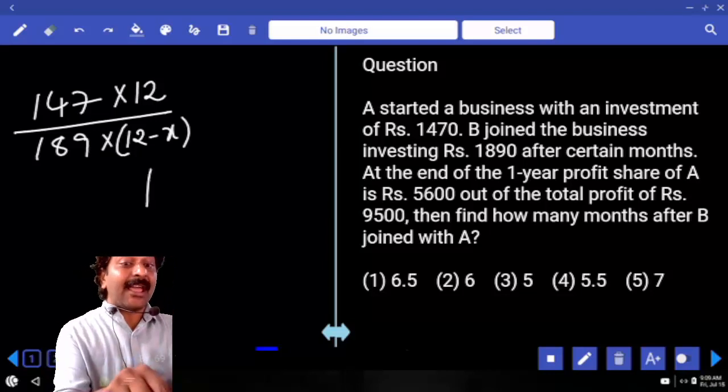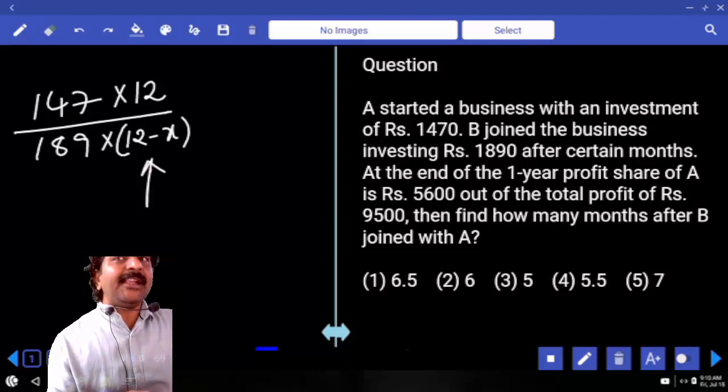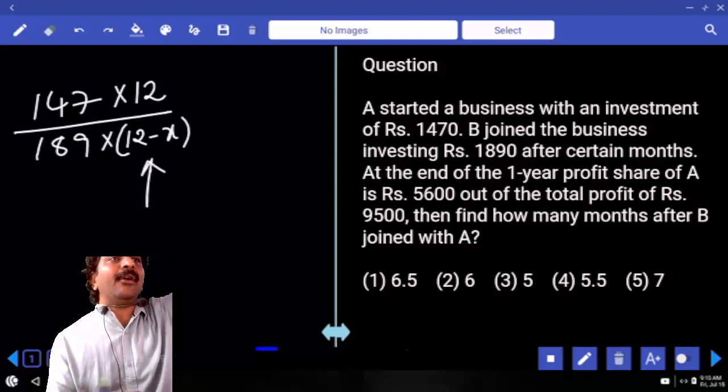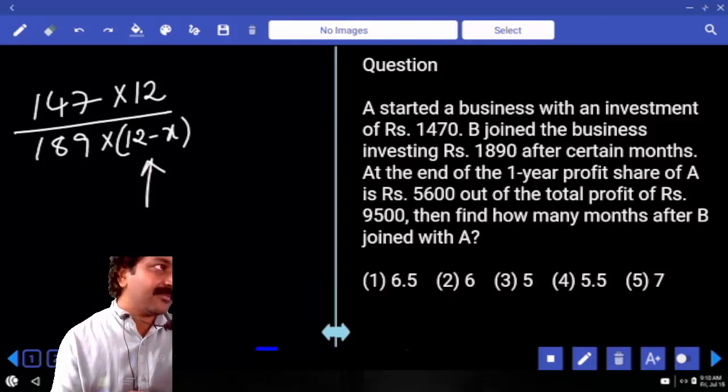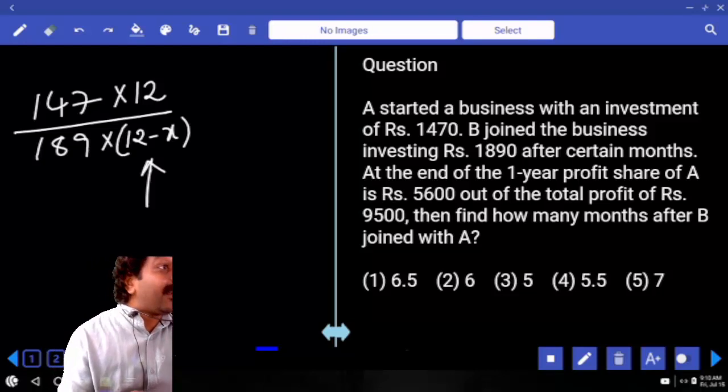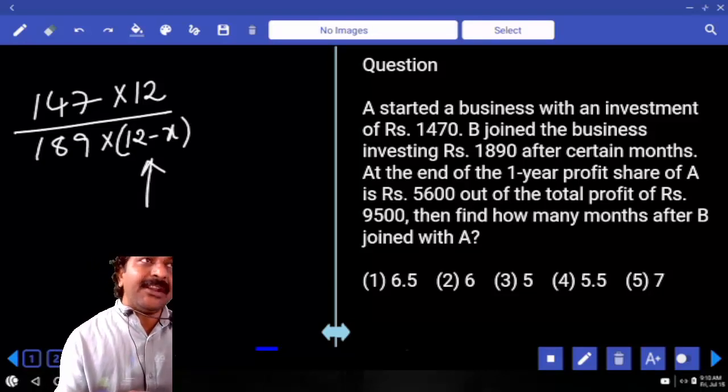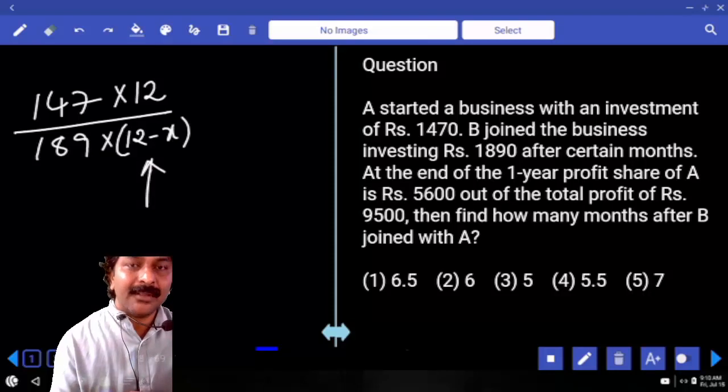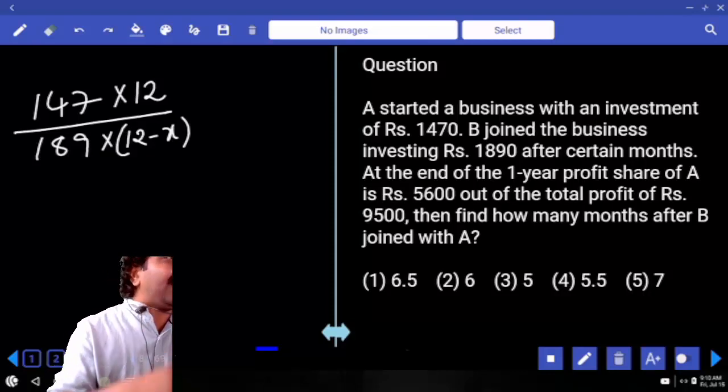Writing this particular line is very important. If you write it as X, in final answer you have to take 12 minus X. If you write X here, that says B is there for X months. B joined after how many months means you have to take difference between 12 and X only. So that part is crucial.